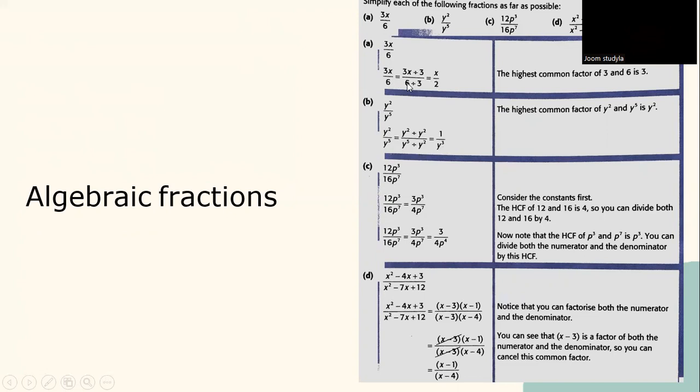Same thing goes to here. y to the power of 2 divided by y to the power of 5. What you've got to do is, the highest common factors of y to the power of 2 and y to the power of 5 is y to the power of 2. What you have to do is divide numerator and denominator with y to the power of 2. Then you simplify it. You get y to the power of 2 divided by y to the power of 2 equals to 1, and y to the power of 5 divided by y to the power of 2 will become 5 minus 2, become y to the power of 3.